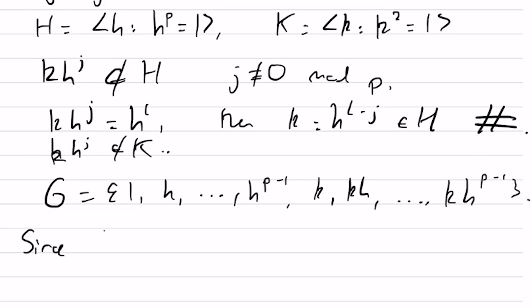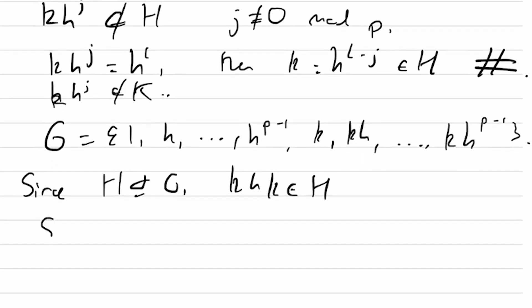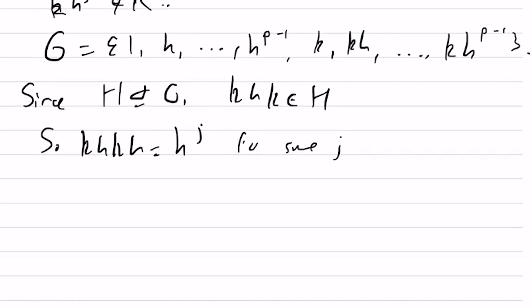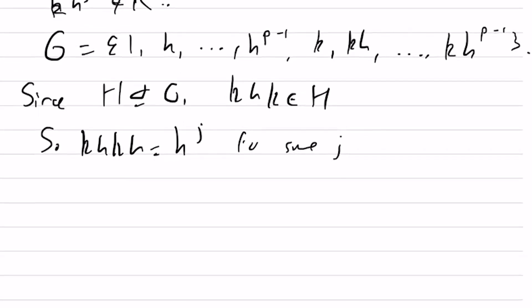Since H is a normal subgroup of G, khk is in H. So khkh equals h to the j for some j. Note that kh is not the identity, so it must have order 2, p, or 2p.